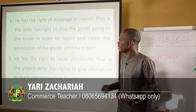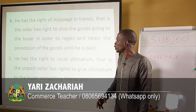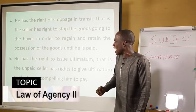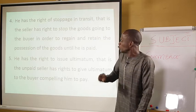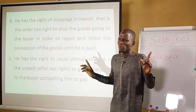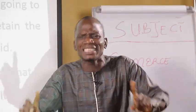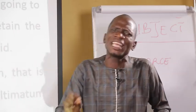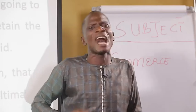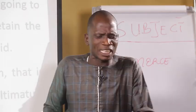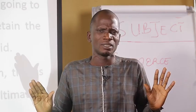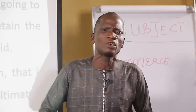The fifth right is he has the right to issue an ultimatum. That is, the unpaid seller has a right to give an ultimatum to the buyer compelling him to pay. Whenever you want a particular business to be done within a stipulated time, as an agent you have a right to tell the buyer that the business is going to take place within this very particular period. It is your right to always inform your buyer.